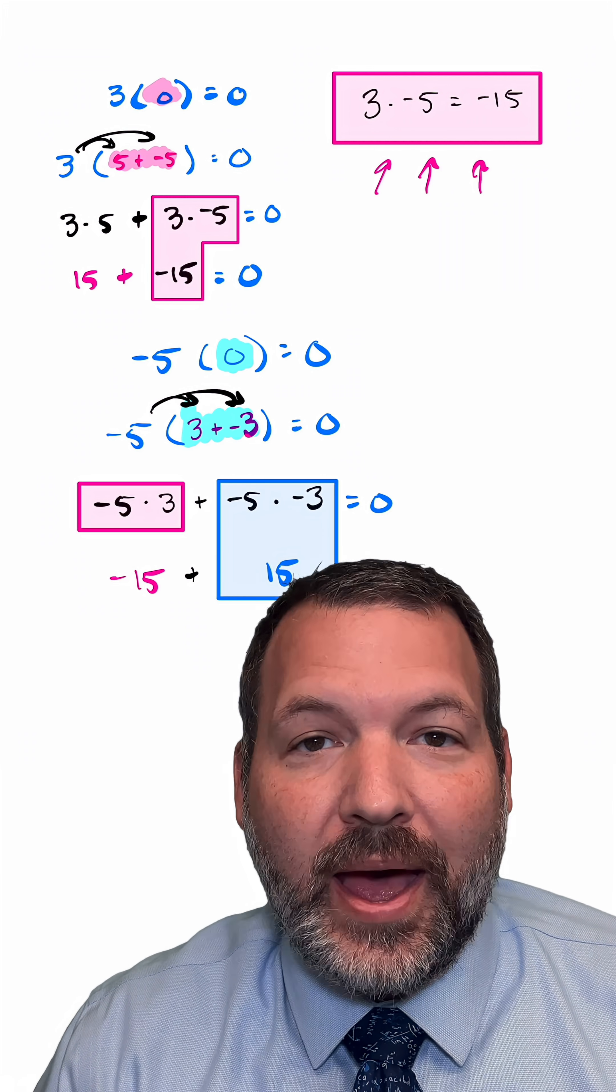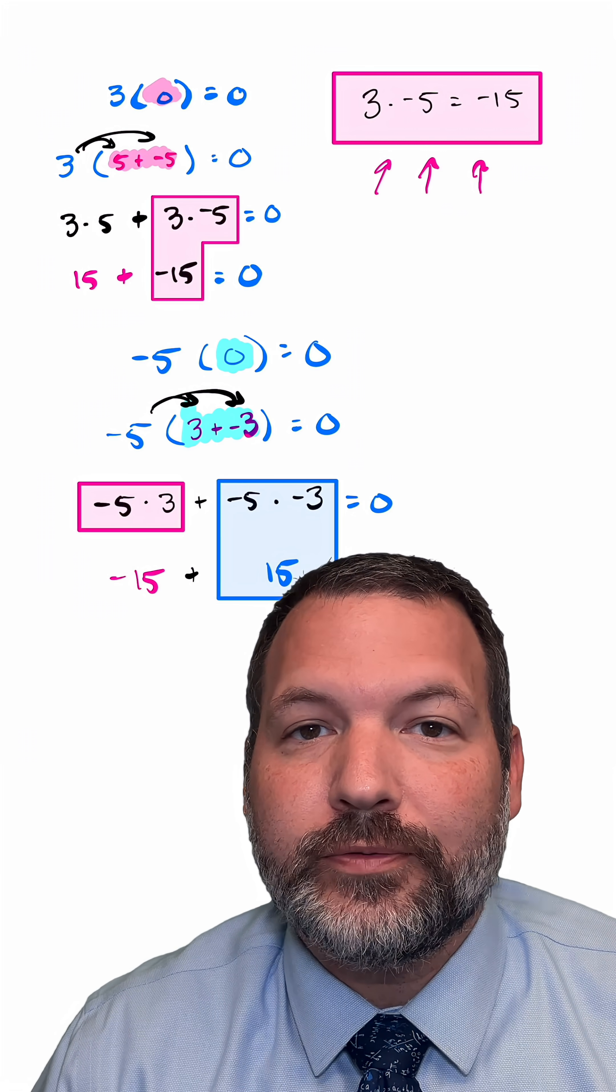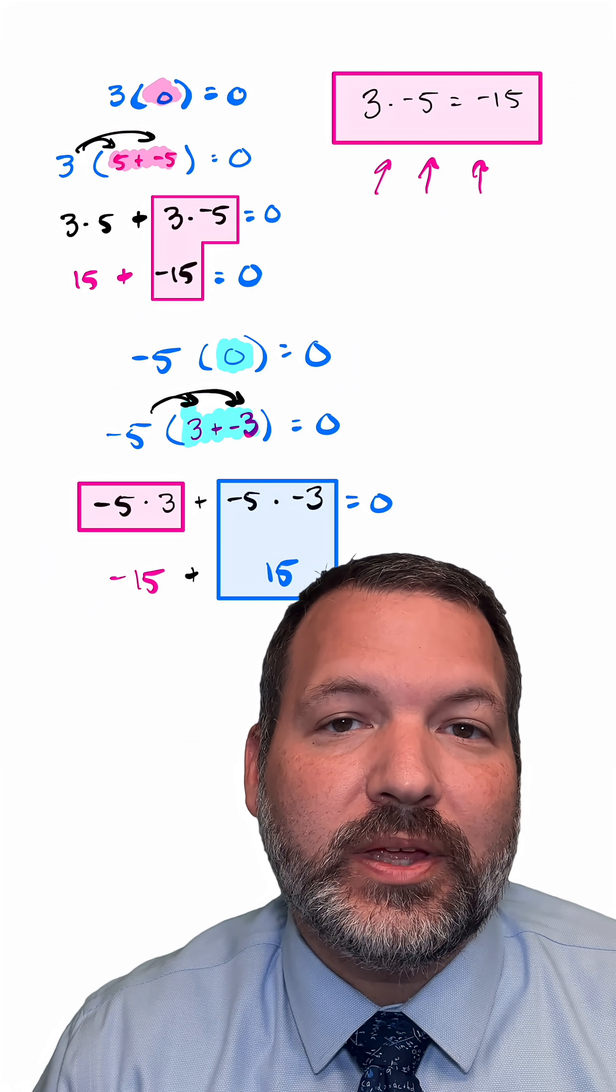Of course, in this case, I've done this with some actual numbers, 3, 5, negative 3, negative 5, but you could easily imagine doing the same thing for just positive quantities, negative quantities. You could do this same thing symbolically.